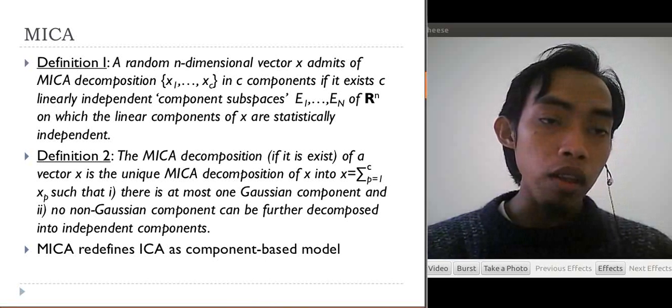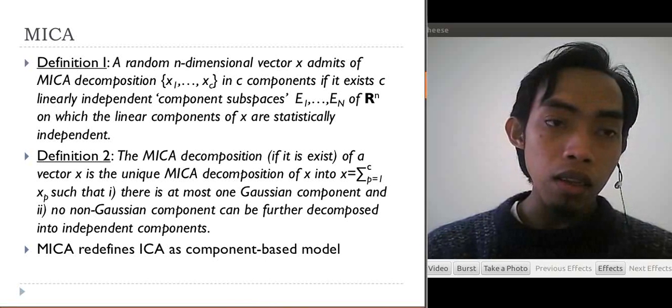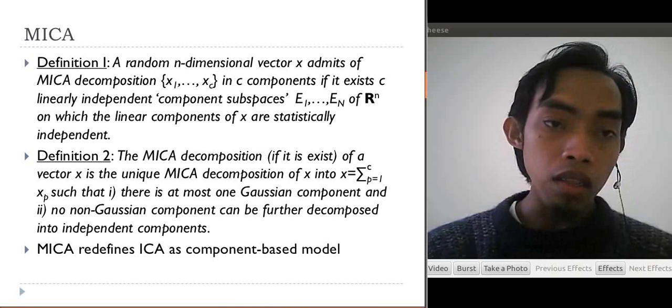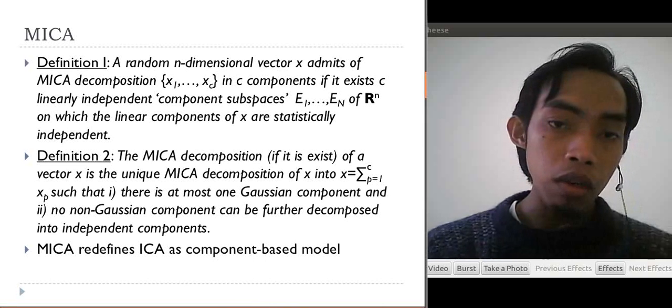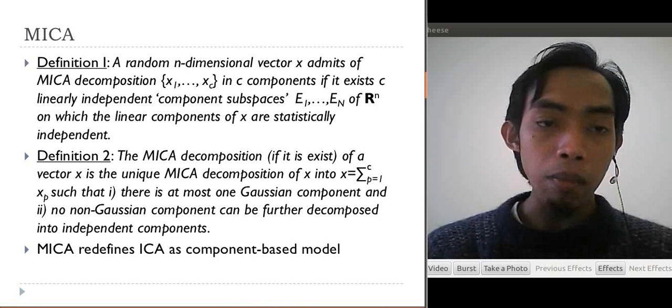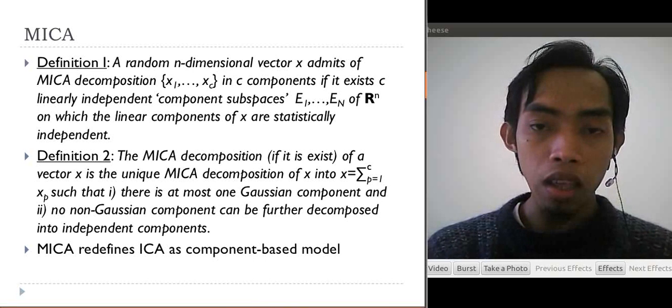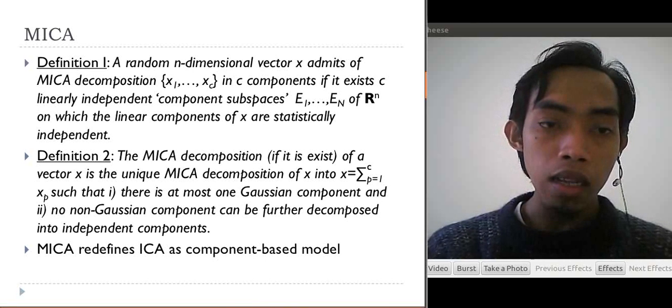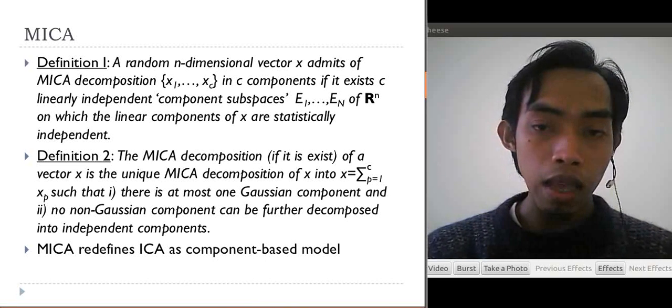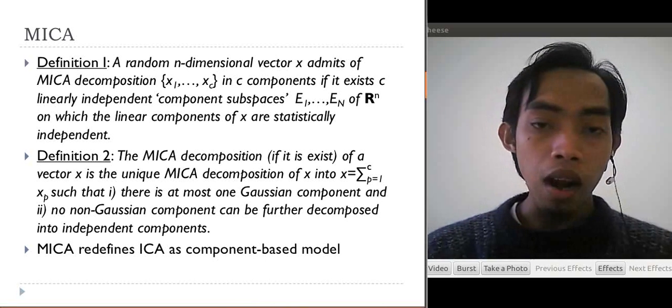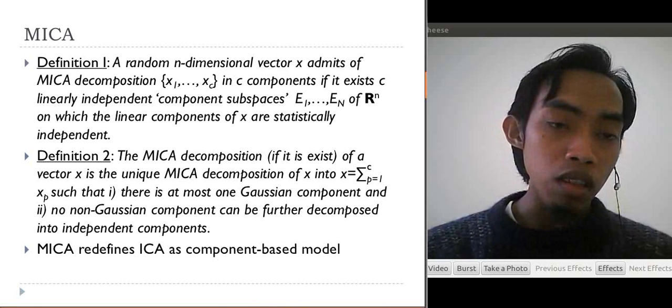The key point, the basic idea of MICA, is defined by two definitions in the paper. The first definition states that a random n-dimensional vector X admits a MICA decomposition X1 until XC in C components if there exists C linearly independent component subsets A1 until AN of real N on which the linear components of X are statistically independent.